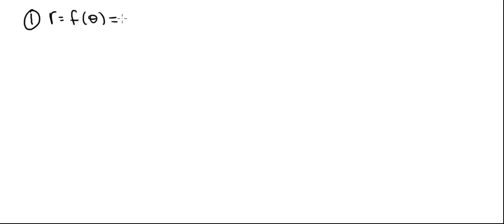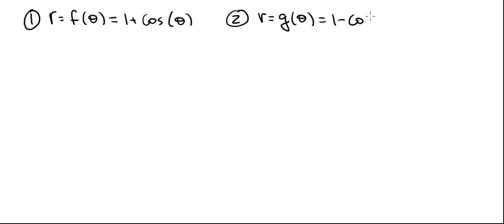We're going to graph two polar equations. The first one is r equals f of theta equals 1 plus cosine of theta. The second one is r equals g of theta equals 1 minus cosine of theta. Once we have the graph for the first polar equation, we'll be able to get the graph for the second equation fairly easily. So let's graph the first one.